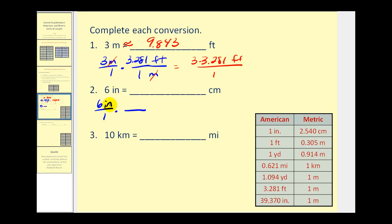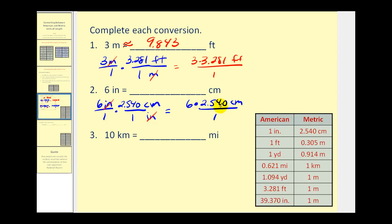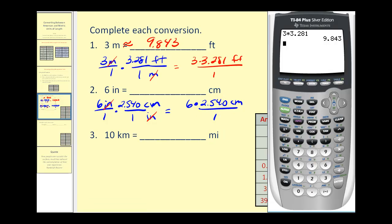Since the inches need to simplify out, we'll write inches in the denominator and our numerator will be centimeters. The conversion is one inch is equal to two point five four zero centimeters. Notice when we multiply, the inches simplify out. Our numerator is going to be six times two point five four zero centimeters, all over one. Let's go ahead and evaluate this on the calculator: six times two point five four zero. So we can say that six inches is approximately equal to fifteen point two four centimeters.